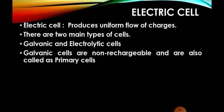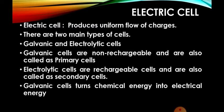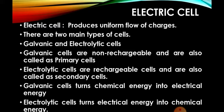Electrolytic cells are rechargeable — like the mobile battery which can be recharged. These are called electrolytic cells and are also called secondary cells. Galvanic cells convert chemical energy into electrical energy. Whatever chemicals are inside undergo chemical reactions, converting that chemical energy into electrical energy, and so electric current is generated.